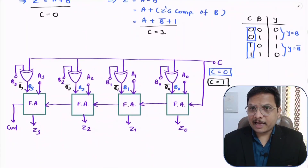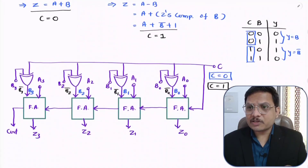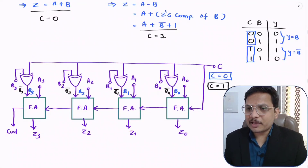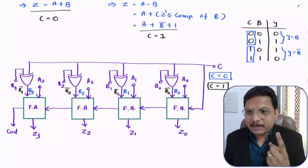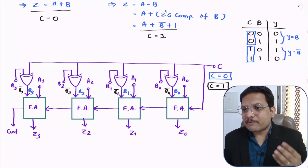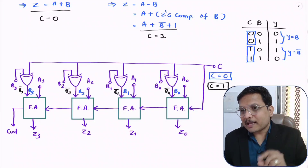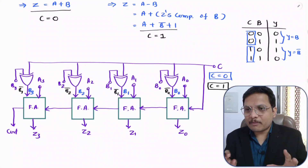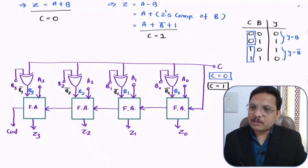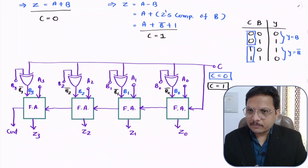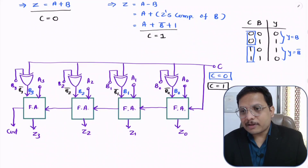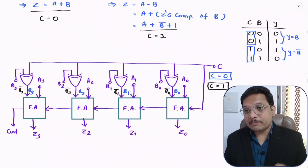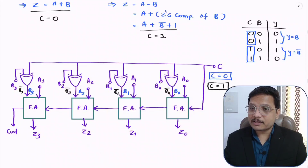I made this video based on the request of one of my students. He told me that I had explained the 1-bit subtractor and asked if I could explain the 4-bit subtractor. I mentioned in that video that things are the same — you just need to extend the circuit — and here I have shown how that extension works. Still, if you have anything to share, please note it down in the comment box. Thank you so much for watching this video.